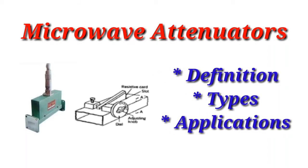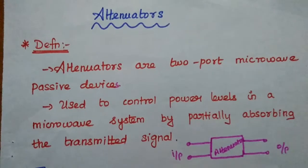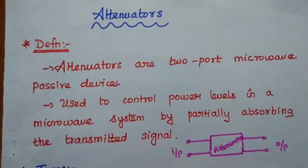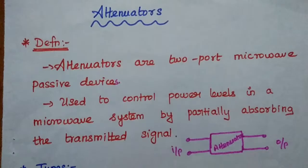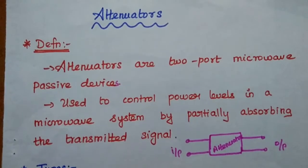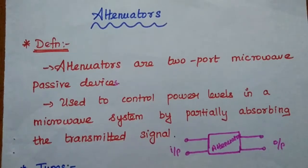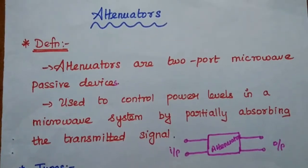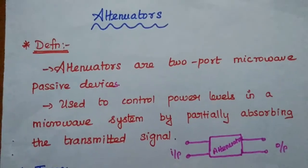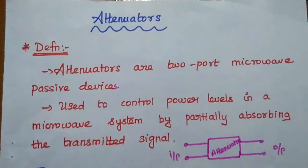Dear students, now we are going to discuss about microwave attenuators, its types and applications. Microwave attenuators are two-port microwave passive devices. Attenuators are mainly used to control the power levels in a microwave system.